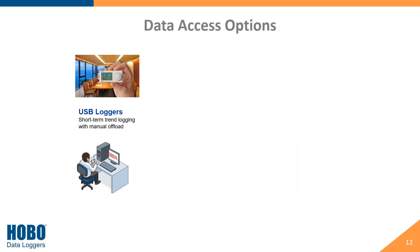We have a few different ways to access data from our loggers. The first is our USB-style data loggers, which are ideal for short-term deployments where you just want to look at trends. Say, for example, you're going in and doing an audit in a conference room to ensure lights are going on and off as scheduled for a week or two. You put it in place, let it record data, remove it from the deployment site, and offload the data.